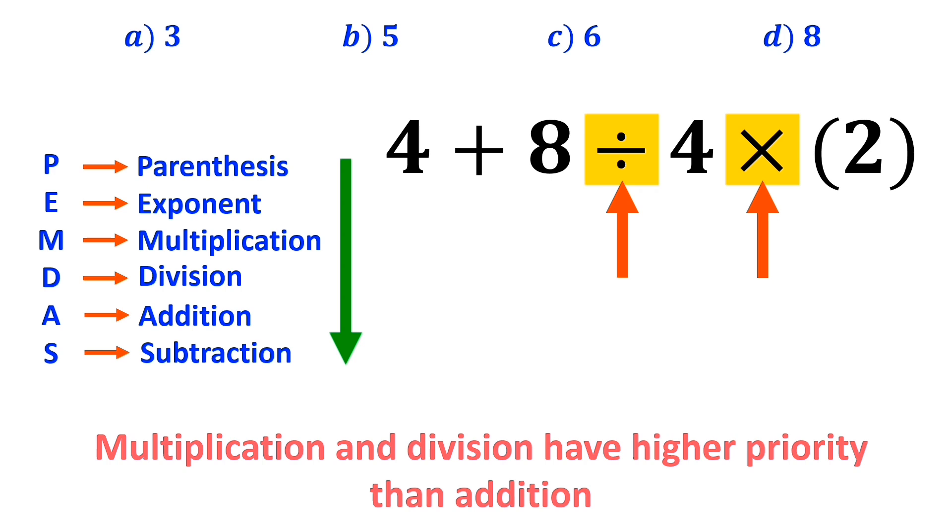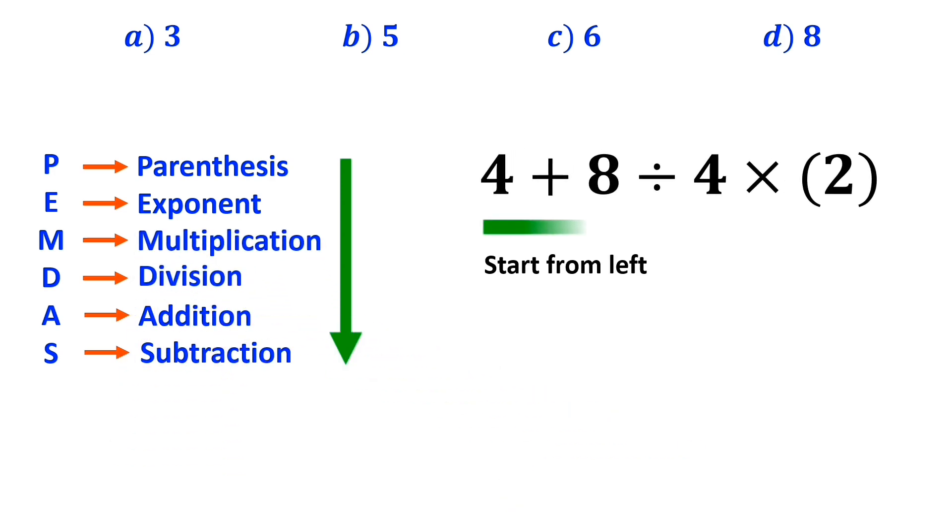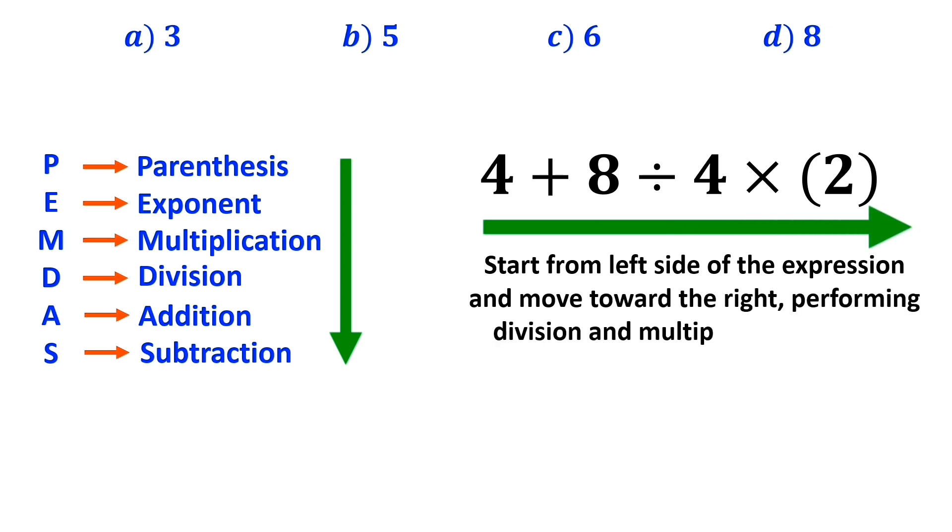However, it's very important to note that in the PEMDAS rule, multiplication and division have the same level of priority. In this case, the best thing to do is to start from the left side of the expression and move toward the right, performing division and multiplication in order.